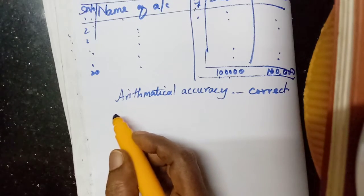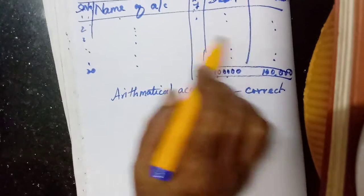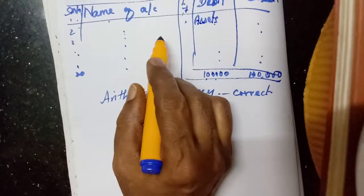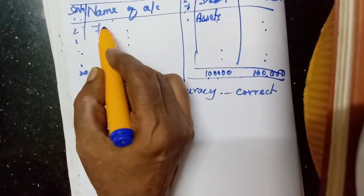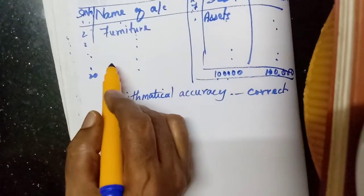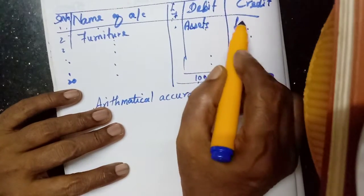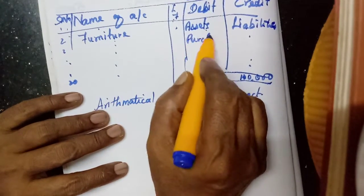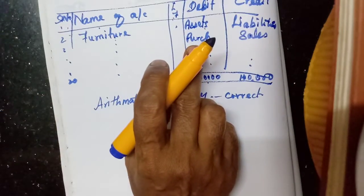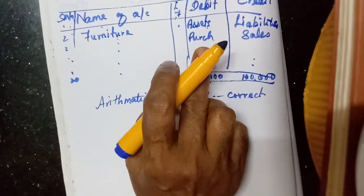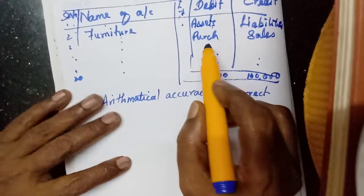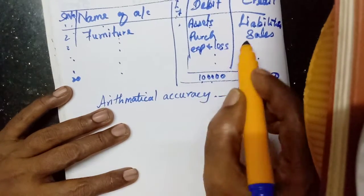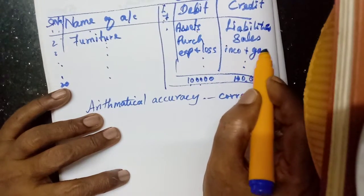Now I will explain what should be debited and what should be credited. All assets should be on the debit side — for example, furniture is debited. All liabilities will be credited. Purchases are debited, and sales will be credited. All expenses and losses will be debited, while all income and gains will be credited.